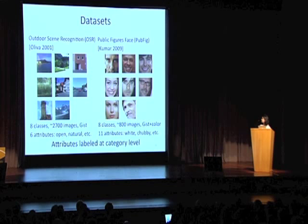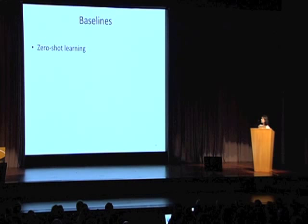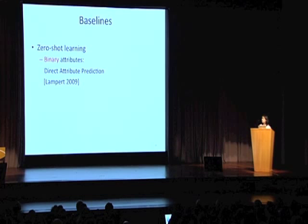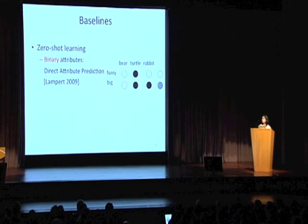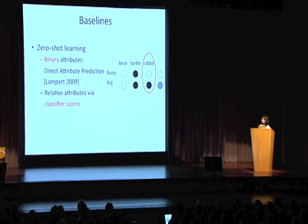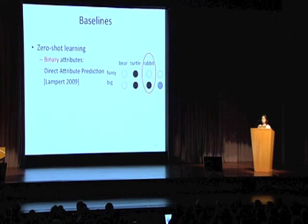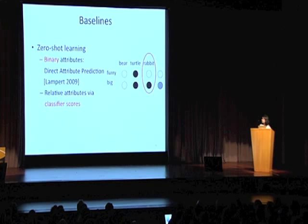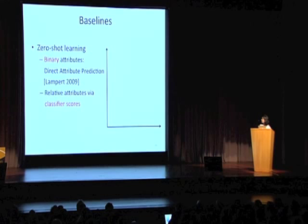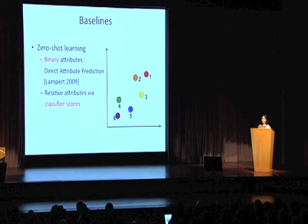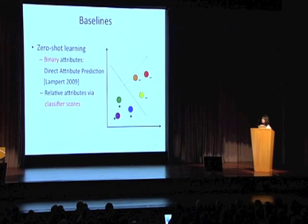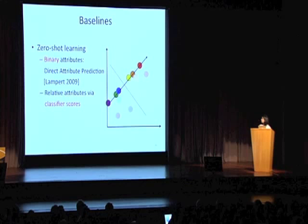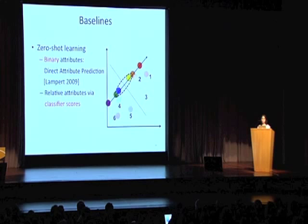We consider two baseline approaches for zero-shot learning. The first uses binary attributes with the direct attribute prediction model of Lampert et al., where each category has a binary signature of which attributes are present, and a test image is assigned to the most similar category. The second baseline trains relative attributes via classifier scores instead of ranking functions — separating images as positive or negative based on rank and training a binary classifier. This projection does not respect the desired ordering, as seen in swapped ranks between adjacent points, which affects result quality.